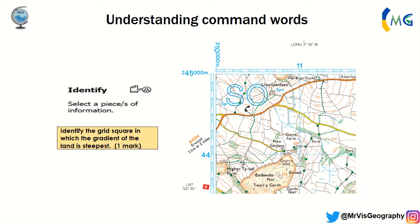You can clearly see that you've got a height point of 325 metres and the contour lines around this area are really steep. Based on the rule of 'along the corridor and up the stairs,' you can see that this is grid line 11, so this one will be 10. This one is 44, so the one before is going to be 43. The grid square you're looking for is going to be 1043. It's one mark.